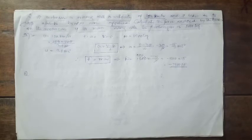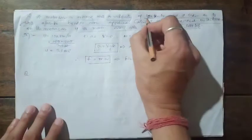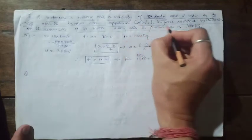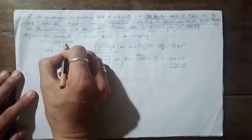The car has mass 1000 kg, initial speed 108 km/h, and it stops in 4 seconds. The initial velocity must be converted to SI units: 108 × 1000 ÷ 3600 = 30 m/s. Final velocity is 0 (car comes to rest), time = 4 s, mass = 1000 kg.